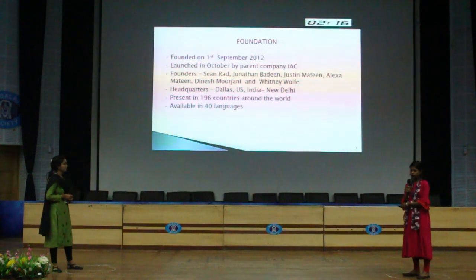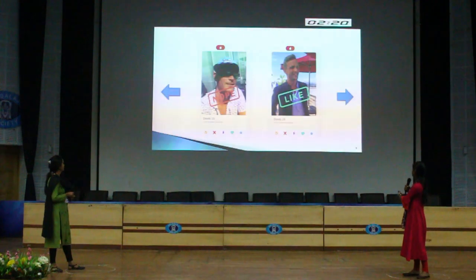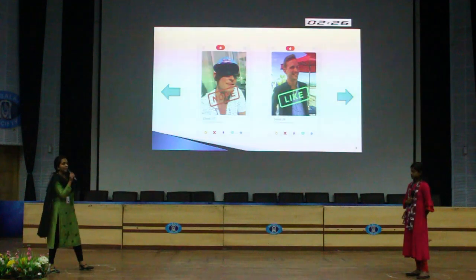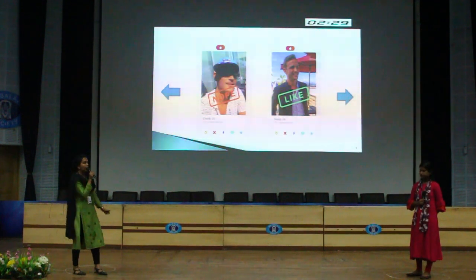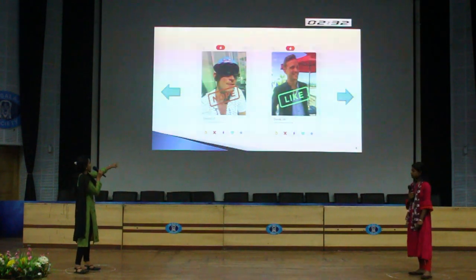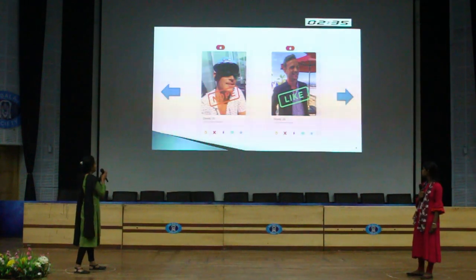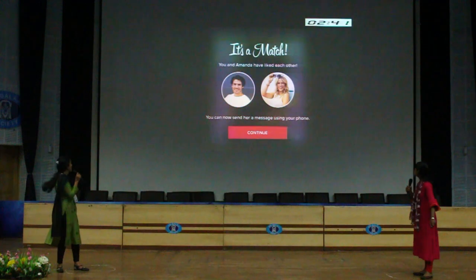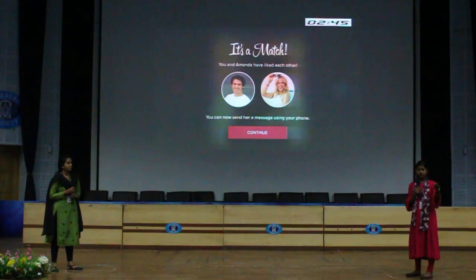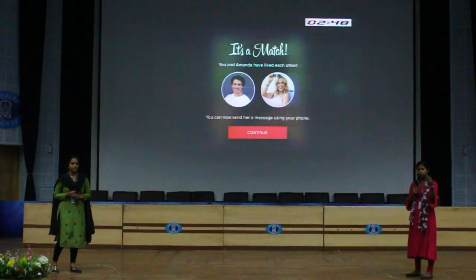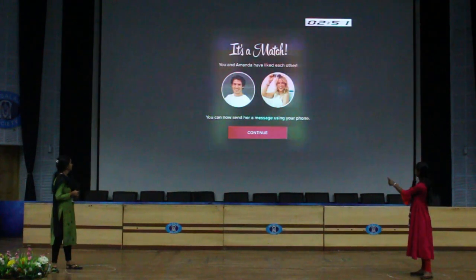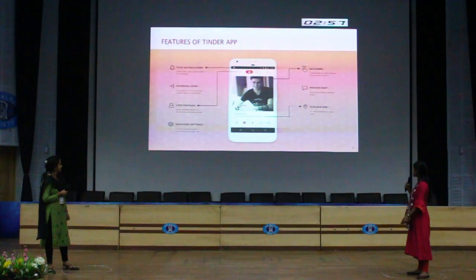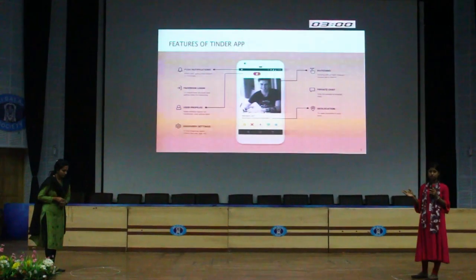The Tinder application is present in 196 countries around the world and is currently available in 40 languages. From the image displayed, if I create my Tinder profile I have an opportunity to like or dislike — if I swipe right that means I like David, whereas if I swipe left I don't like him. When both users match, meaning both like each other's profiles, that match notification comes to your application or website.